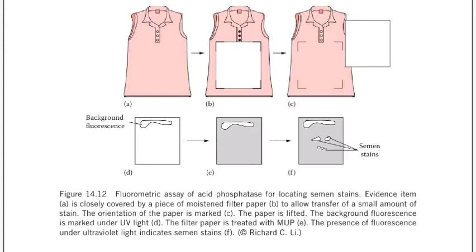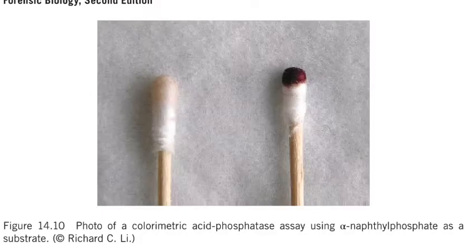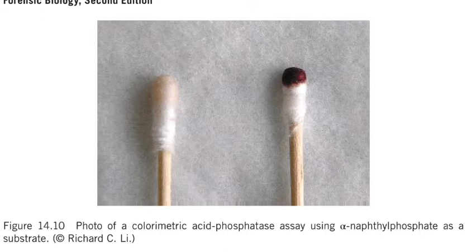There are various chemical tests one can conduct, such as the acid phosphatase test, Florence test, Barbourous test, and creatine phosphokinase test. The acid phosphatase test is very important from a forensic point of view because a high concentration of acid phosphatase — which is an enzyme — is present in the semen of human beings and monkeys. It is a very valuable screening test, and acid phosphatase is secreted by the prostate gland, belonging to the phosphatase family.